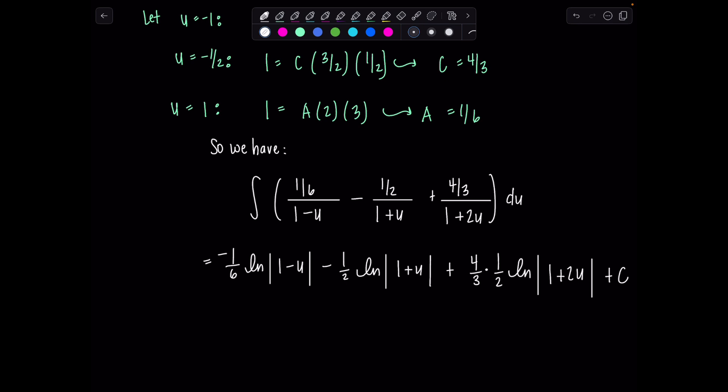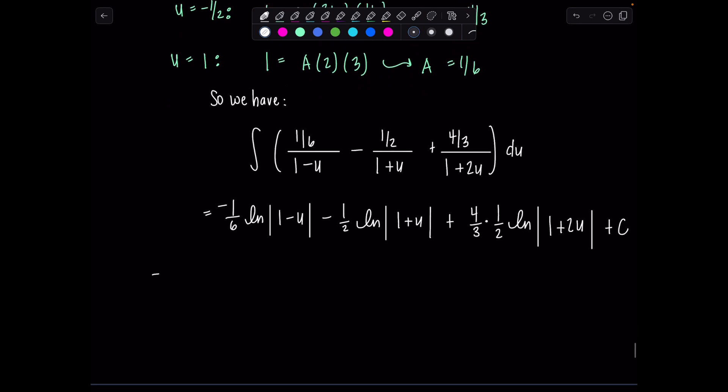And then just go back. Remember, u was our good friend sine theta, so we can clean up a bit more. Negative 1 sixth ln absolute value, 1 minus sine theta. Minus 1 half ln absolute value, 1 plus sine theta, 4 thirds times 1 half. That simplifies. That's just going to be plus 2 thirds ln absolute value, 1 plus 2 sine theta, plus c.